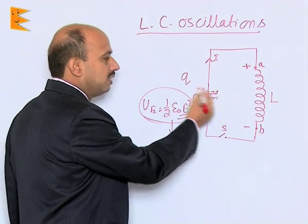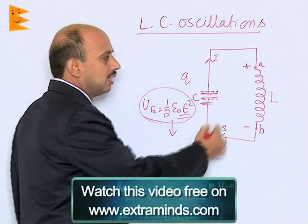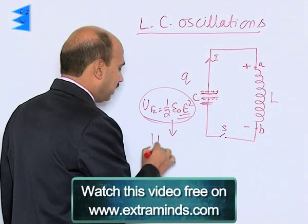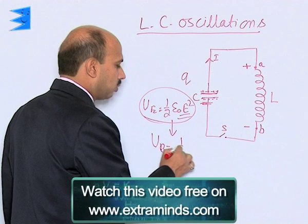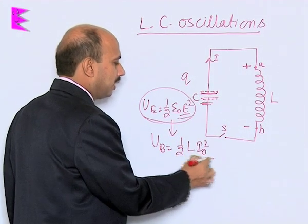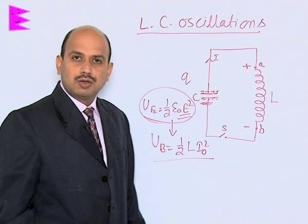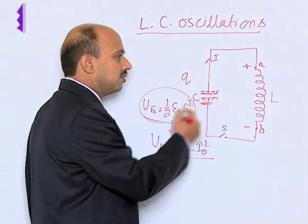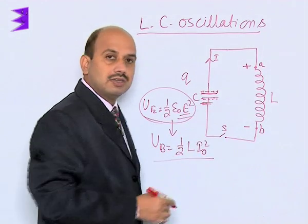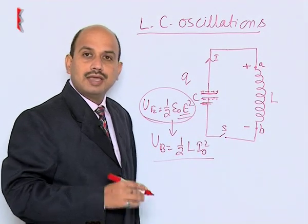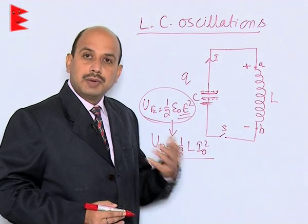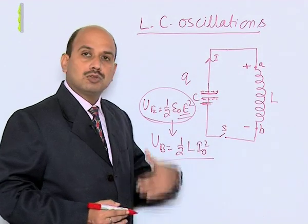When the capacitor is fully discharged, all electrical energy gets converted into magnetic energy, written as U_B = ½LI₀². Once the capacitor is fully discharged, the inductor starts discharging, which causes the capacitor to start charging again — but here the polarity is opposite to the previous one.